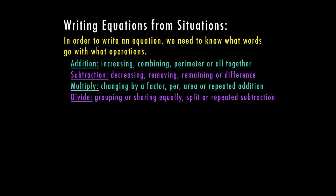When it comes to writing an equation from a situation, we're typically talking about some type of word problem. Addition words are going to be things like increasing, combining, perimeter, or altogether. Subtraction words could be decreasing, removing, remaining, or difference. Multiplying could include changing by a factor, the word per, area, or repeated addition. Dividing is usually grouping or sharing equally. It could also be splitting or repeated subtraction. These are not all the words you're going to see, but these are some of the more common ones we're going to look for.